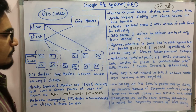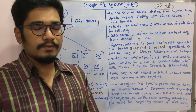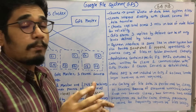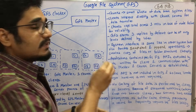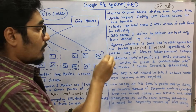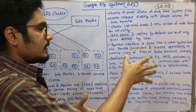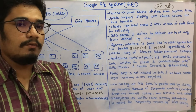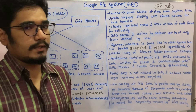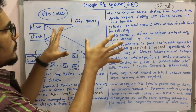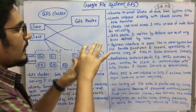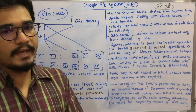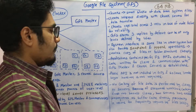In most file systems you encounter a POSIX API, whereas in GFS this POSIX API is not included, so any need for a Linux VNode layer hook-in is not required in GFS, unlike other file systems.